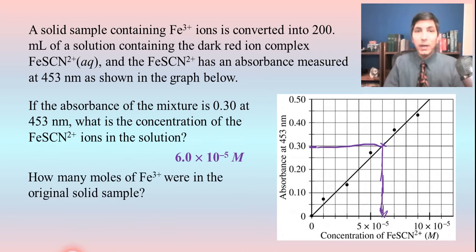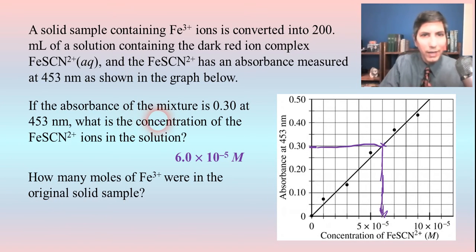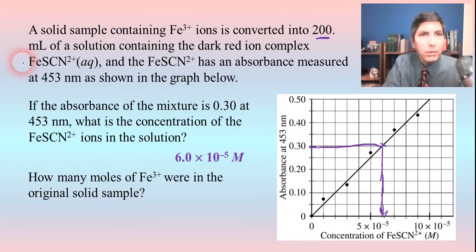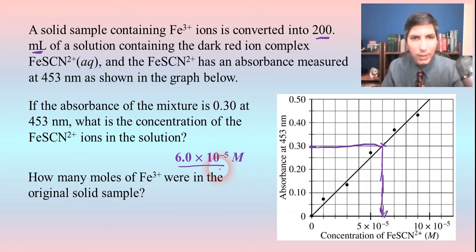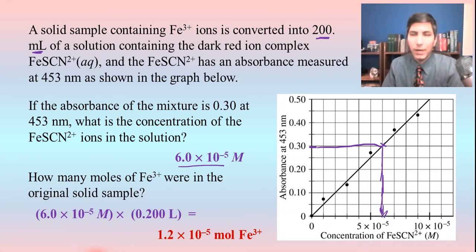What if the question says how many moles of iron three were in the original solid sample? The iron three was converted on a one-to-one basis into the iron thiocyanate, so we can use those values interchangeably for all practical purposes. If we have the volume — 0.2 liters, which is 200 milliliters — and multiply that by the concentration of the iron three ions, we find that the number of moles is about 1.2 times 10 to the negative fifth moles of iron three ions.